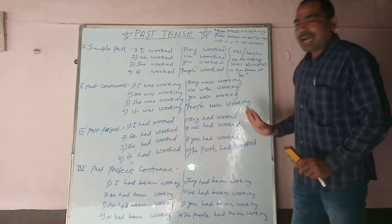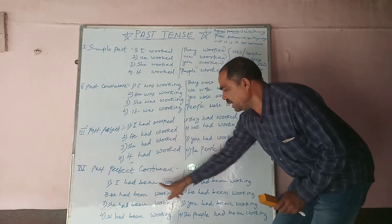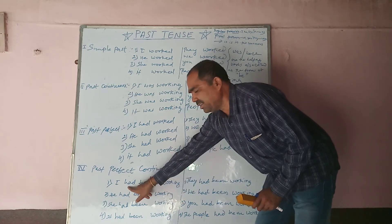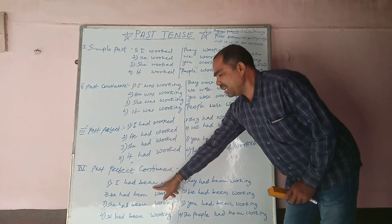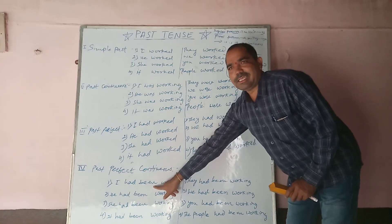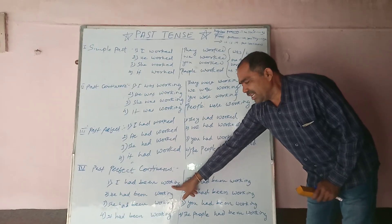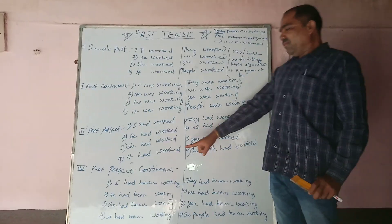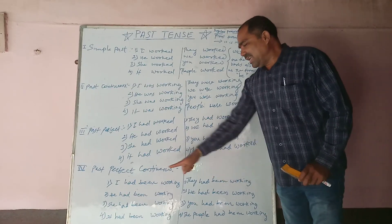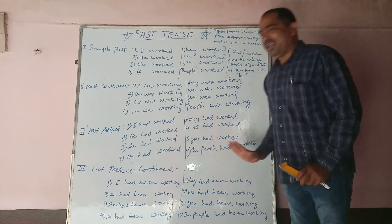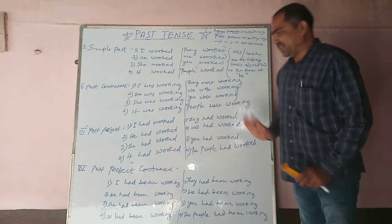In past perfect continuous, 'had' shows it is in past, 'been' shows it is perfect, and 'working' shows it is continuous. So in past perfect continuous: I had been working, he had been working, she had been working, it had been working — these are the examples of past perfect continuous with singular pronouns.